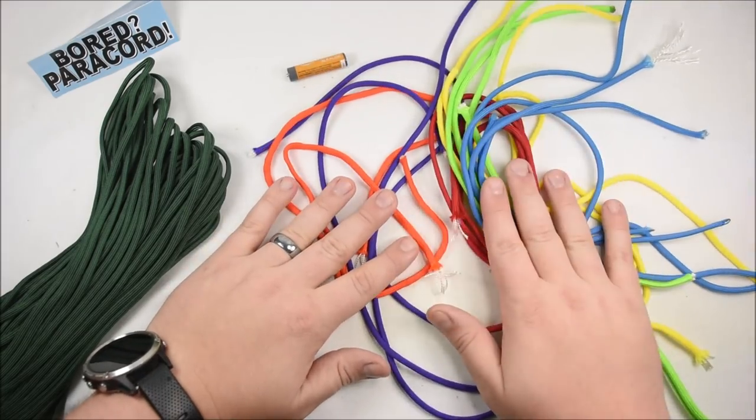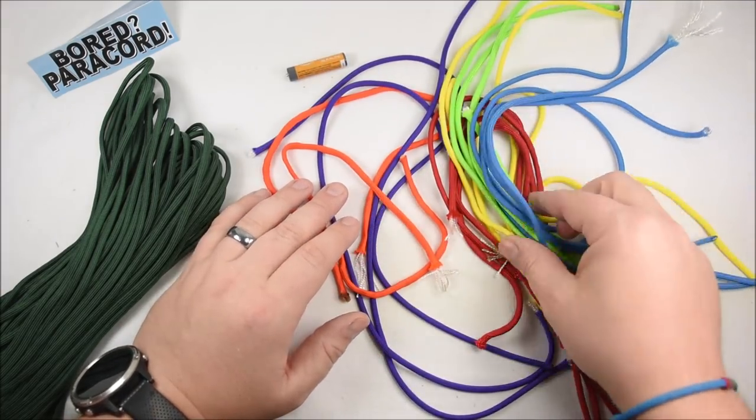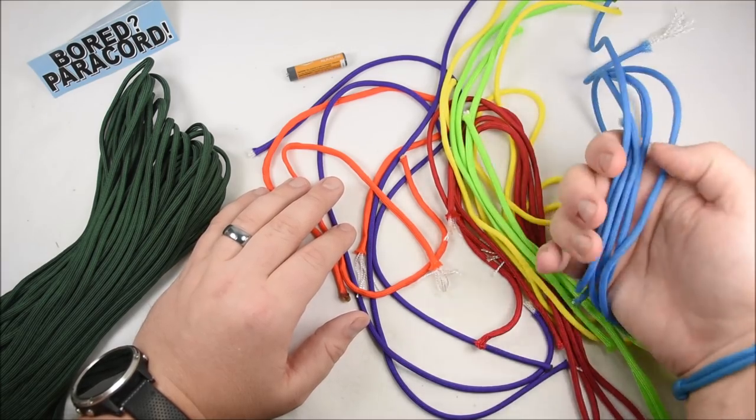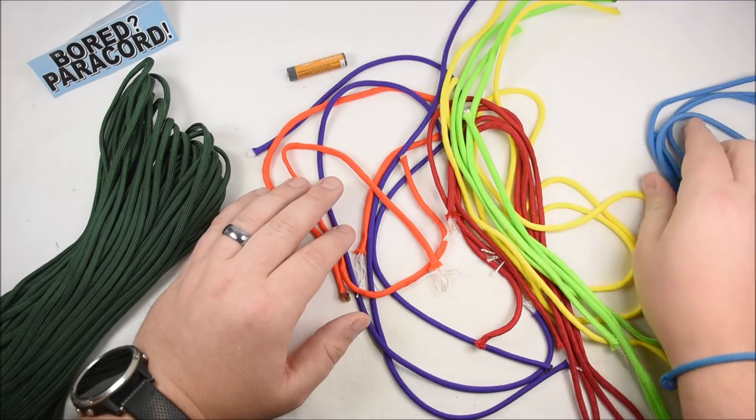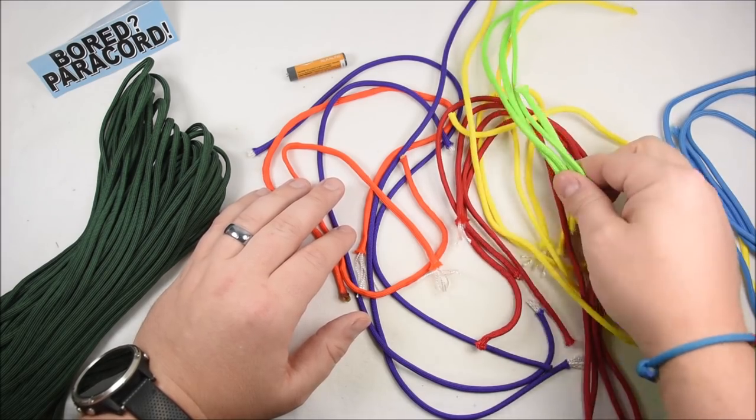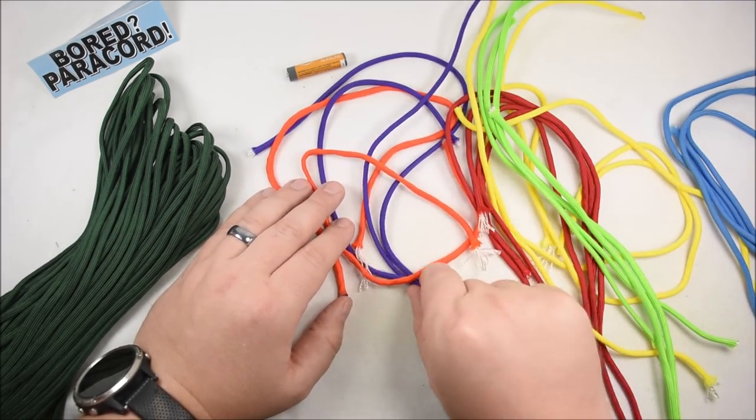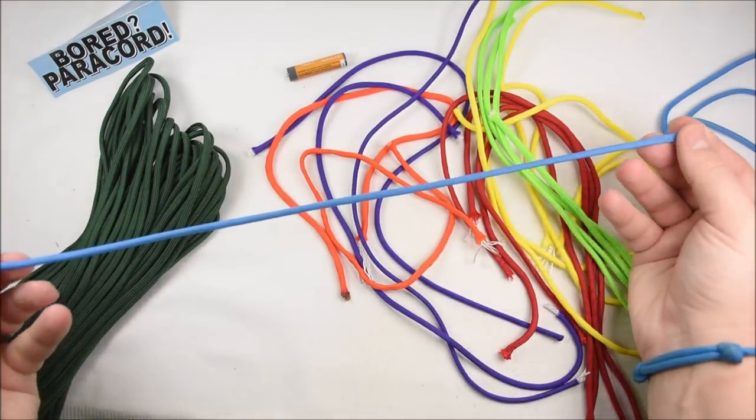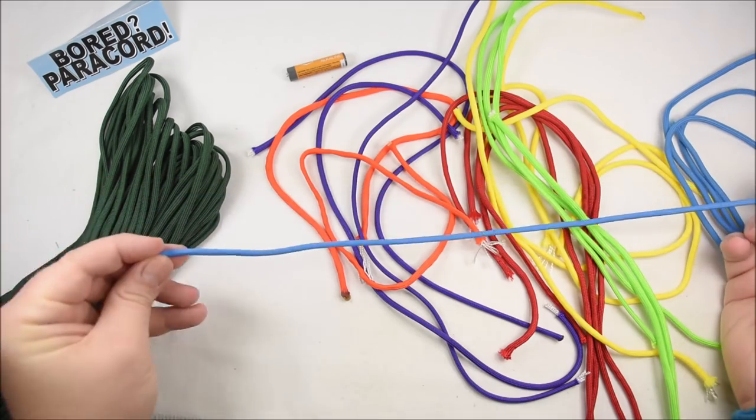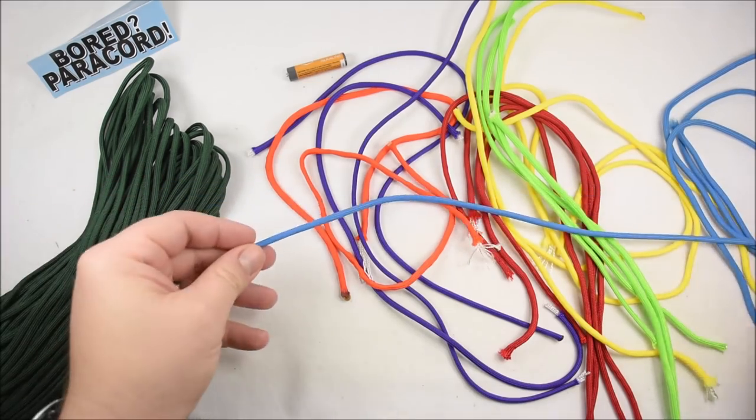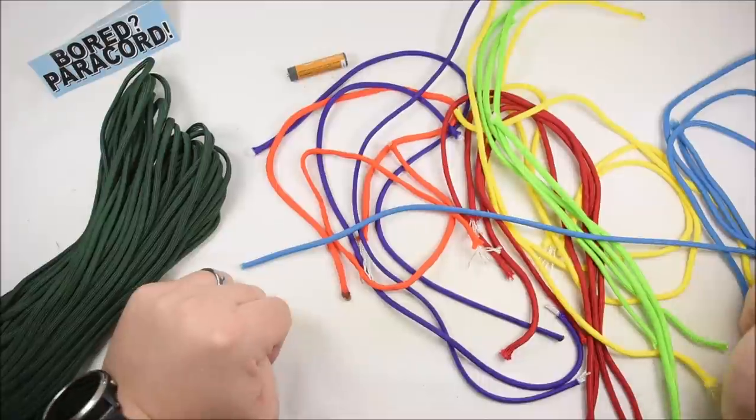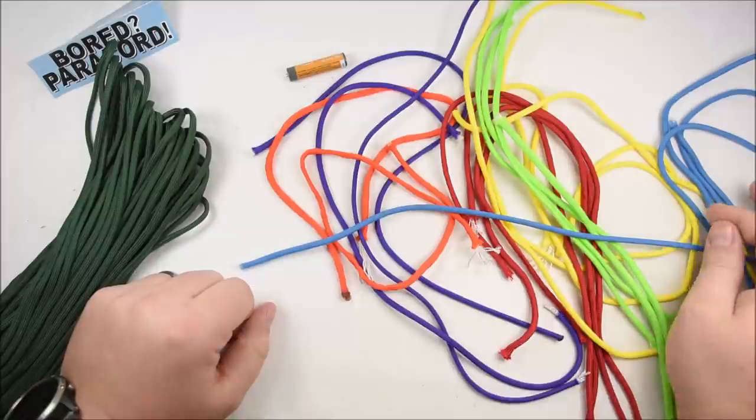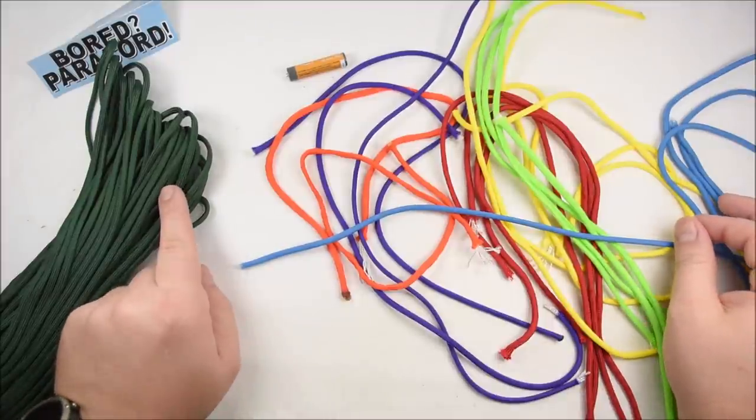So what I've done already, I've done this ahead of time, is I've cut five colors. We've got colonial blue, yellow, red, neon green, orange, and purple. And I have four sections of each color. Each section is about 20 inches, maybe 18 inches. That's all you're going to need for each light. Then I have the hunter green that's going to end up being our string for the lights. This will come in at the very end.